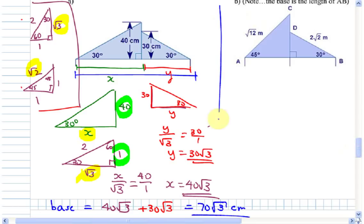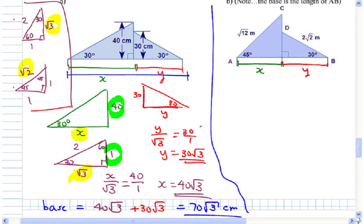The next one is very similar except now you have this different base. Once again, split this up into two parts — it's much easier to do two separate things and then put them together. For the part with X, you need to decide: should you use the 30-60-90 triangle or the 45-45-90 triangle? The answer is the 45-45-90 — the bottom one.